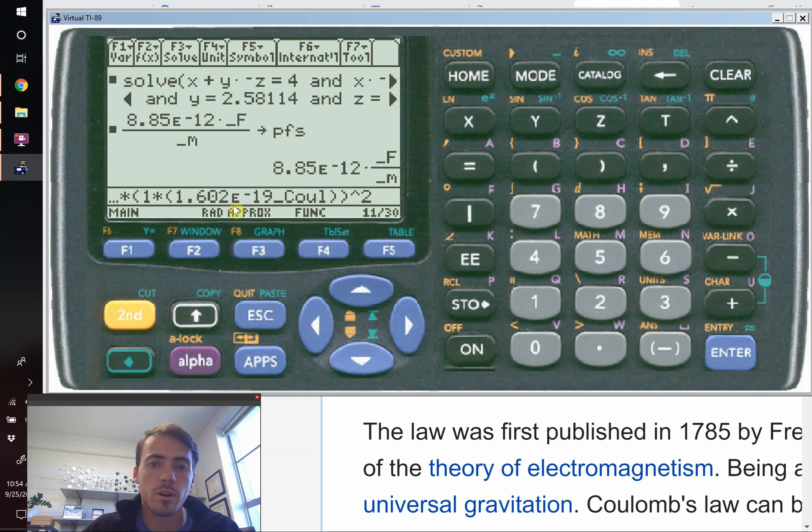Now we just need to divide this by the separation distance. So we'll divide this by a distance. Let's say that these things are located, say, two angstroms apart. So two angstroms, that's 2e-10 meters. So go up here and type in meters.